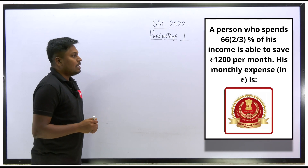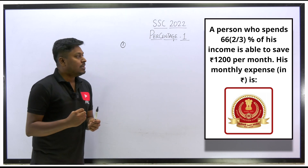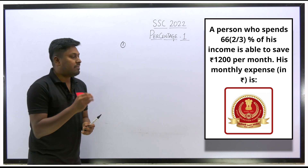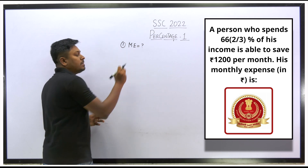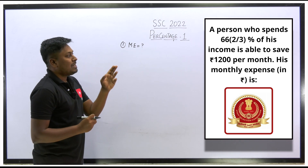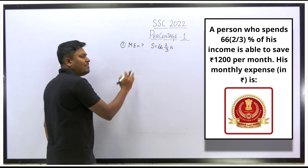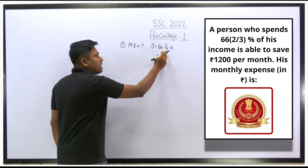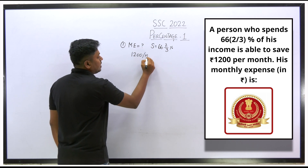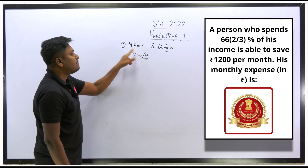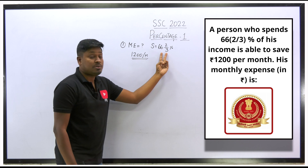Question number one: a person who spends 66⅔% of his income is able to save ₹1200 per month. Find his monthly expenses. Our target is to find the monthly expense — not the monthly salary. He spends 66⅔% of his salary, and saves ₹1200 per month.